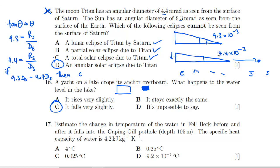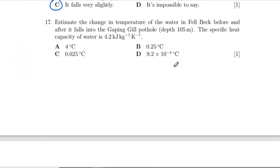Question 17: Estimate the change in temperature of the water in Fell Beck before and after it falls into the Gaping Gill pothole. The energy is mgh, and that is going to be mc delta t. We're trying to get delta t. We cancel those, so delta t is equal to 10 times 105 divided by 4200. We get rid of that and that. Not a lot. 105 over 420 is a quarter of a degree C, so that is B.